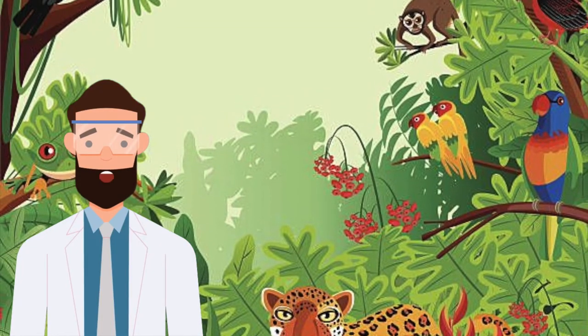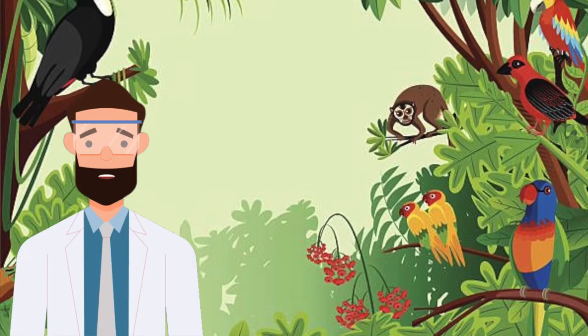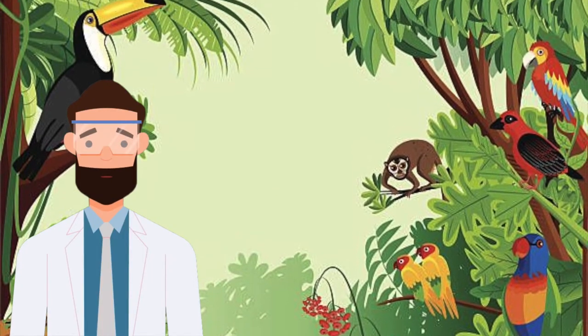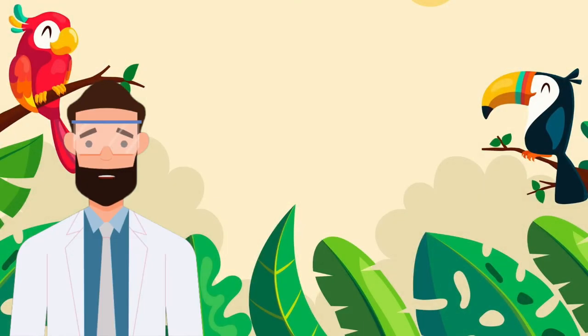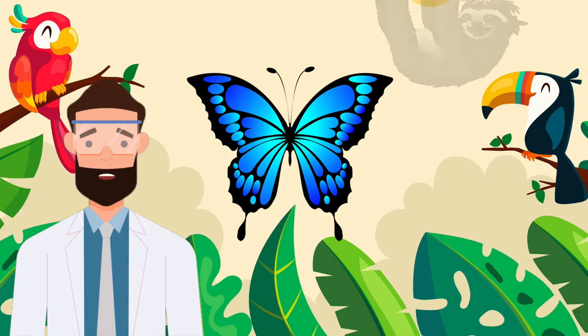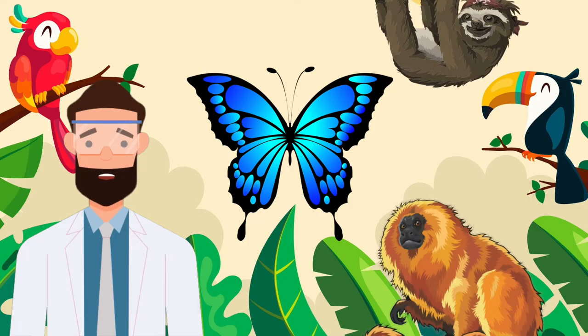Around 10% of all the known species in the world live in the Amazon Rainforest. That's crazy! And it's home to some of the most beautiful and rarest animals in the world, like the Blue Morpho Butterfly, Sloths and the Golden Lion Tamarin.